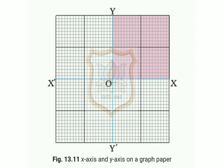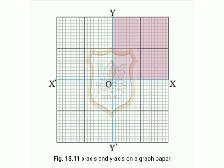The point of intersection of XOX' and YOY' is known as the origin O. The two quantities between which the graph is drawn are shown along these two axes. We show positive values on the X-axis along OX and positive values on the Y-axis along OY. In this chapter we shall consider only positive values, so we use only the shaded part of the graph shown in figure 13.11.